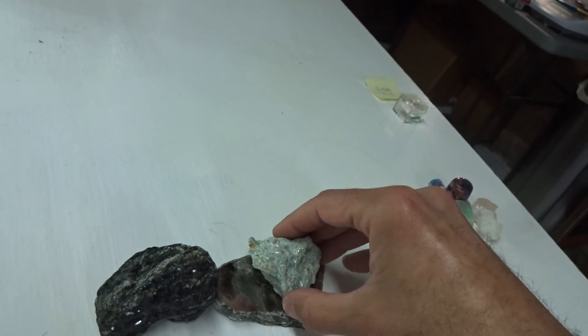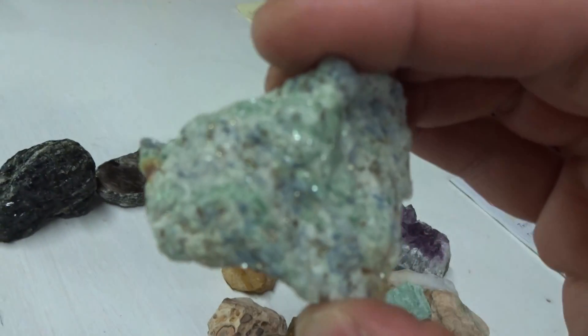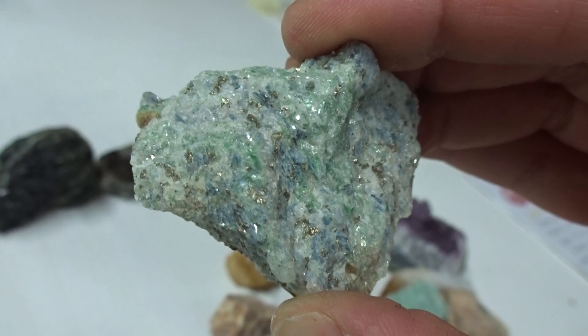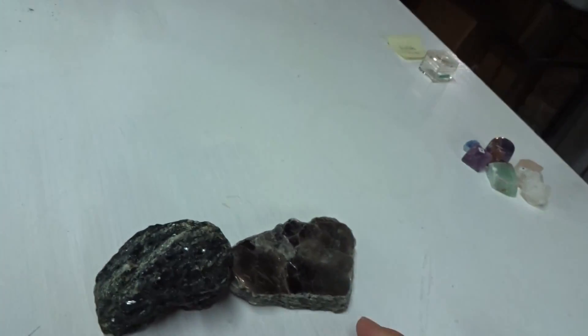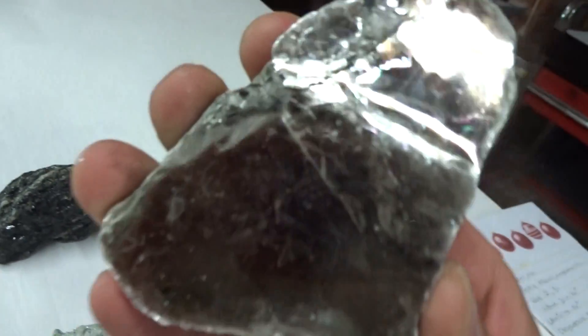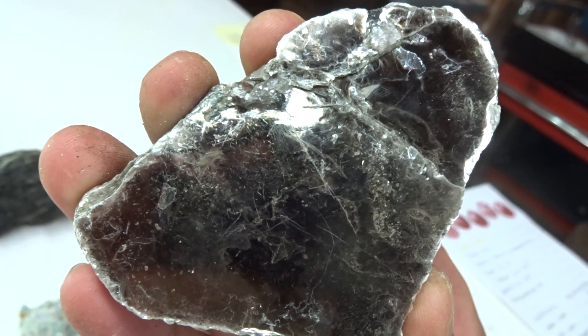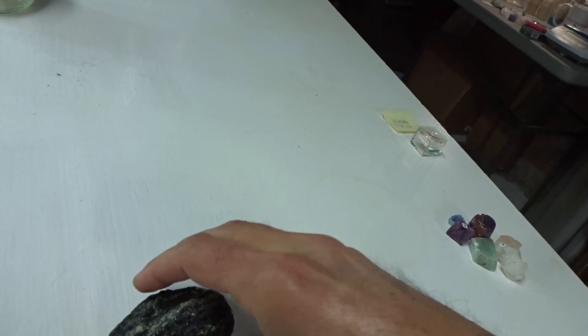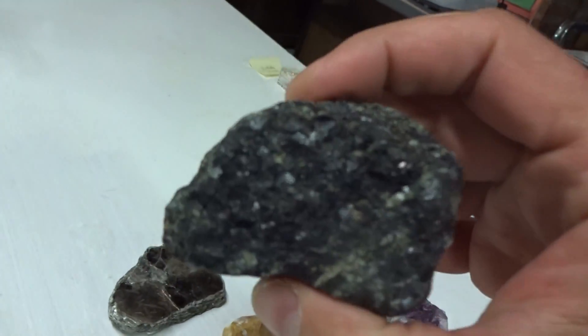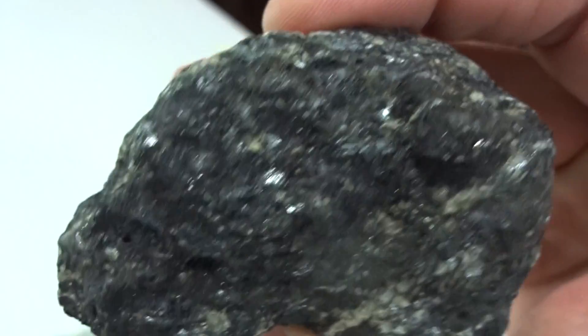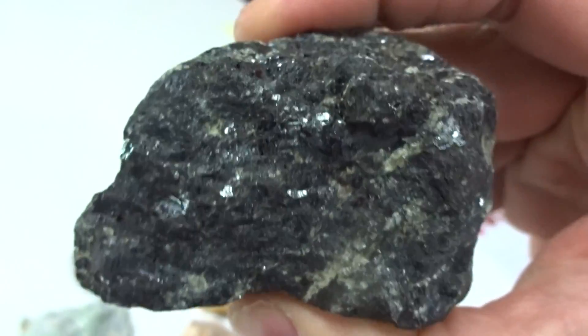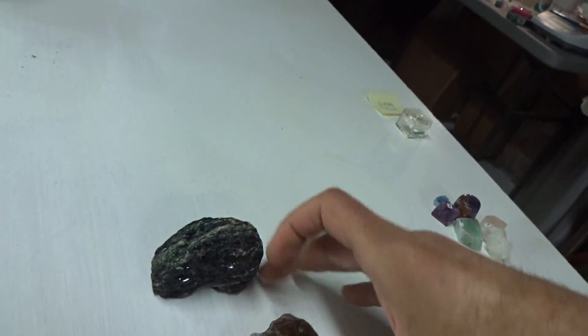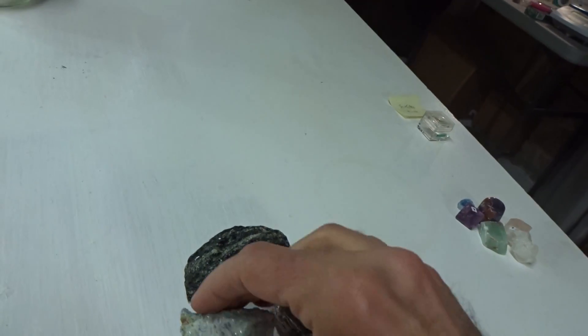Other silicates are fuchsite mica, muscovite mica. That's a book of muscovite mica and this is the schist of biotite mica, black. The micas are volcanic.